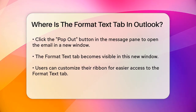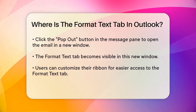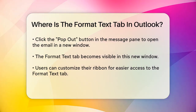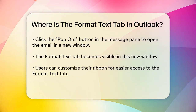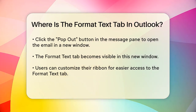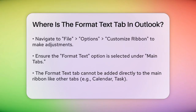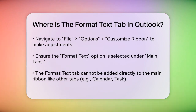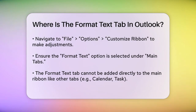If you prefer to have this tab more accessible, you can try customizing your ribbon. Go to File, Options, Customize Ribbon. Here you can select the main tabs and ensure that the Format Text option is selected. However, it's important to note that you cannot add the Format Text tab directly to the main ribbon in the same way you can add other tabs like Calendar or Task.